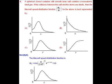Question number 8: A spherical closed container with smooth inner wall contains a monoatomic ideal gas. If the collisions between the wall and the atoms are elastic, then the Maxwell speed distribution function dnv by dv for the atoms is best represented by.